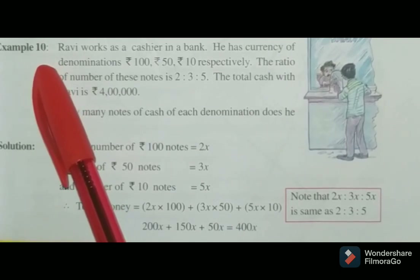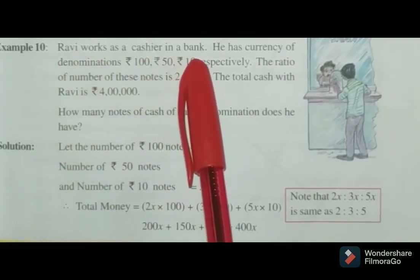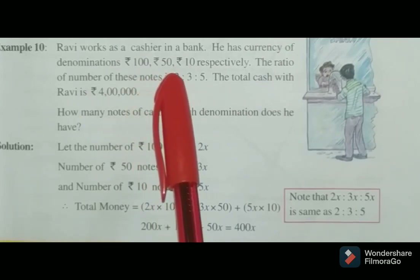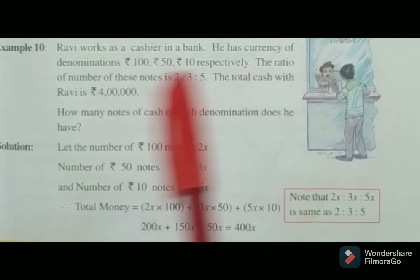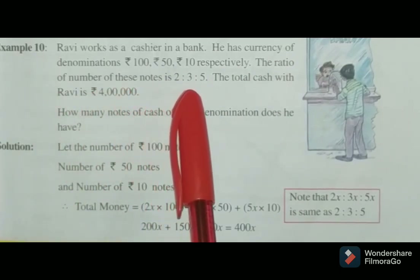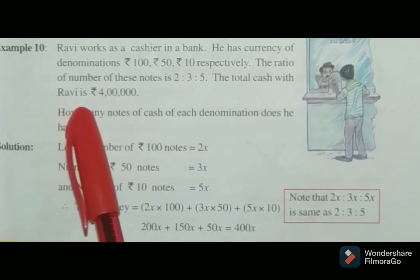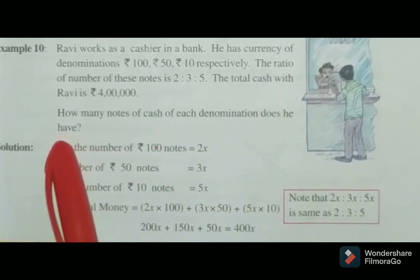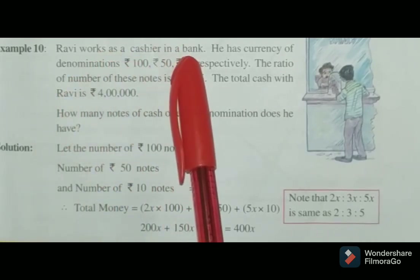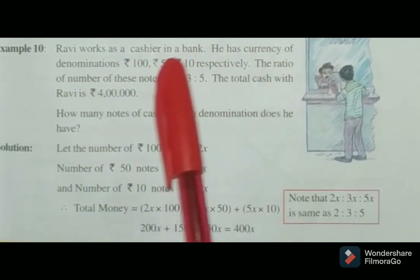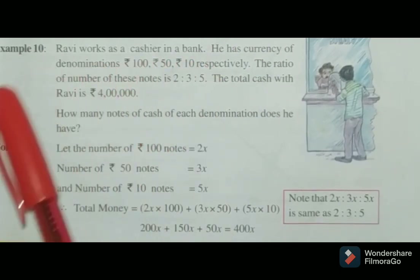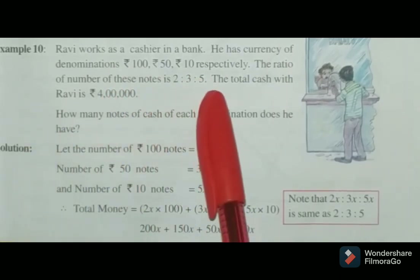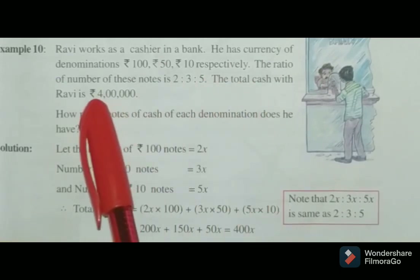Next example: Ravi works as a cashier in a bank. He has currency of denominations 100 rupees, 50 rupees, and 10 rupees respectively. The ratio of the number of these notes is 2 equal to 3 equal to 5. The total cash with Ravi is 4,00,000.